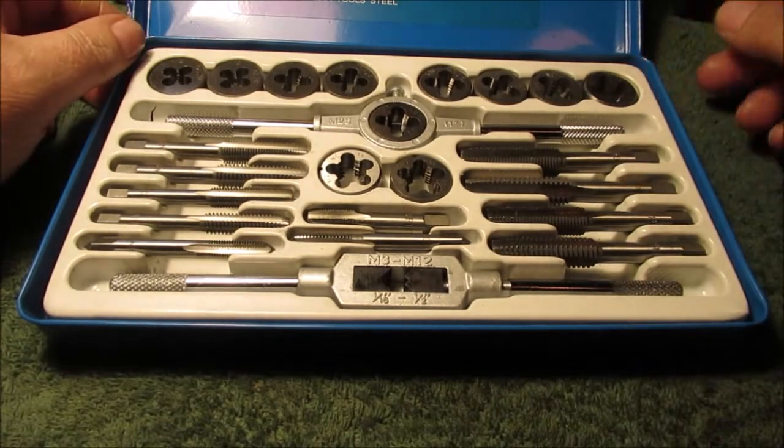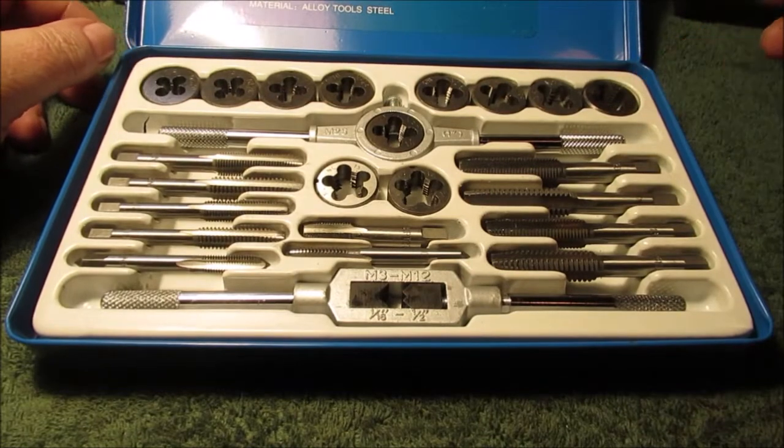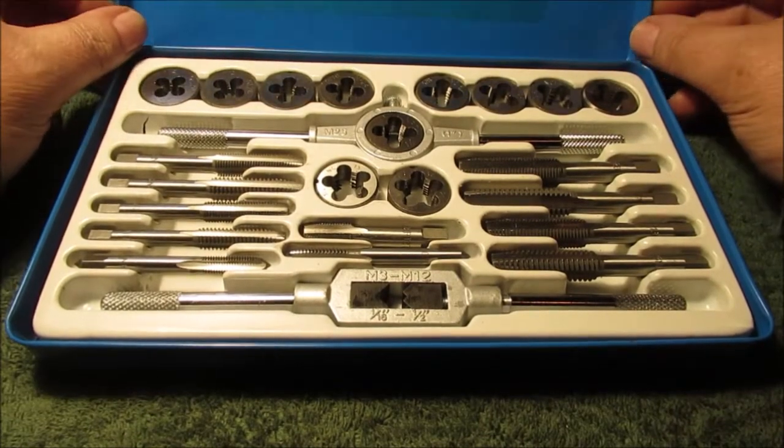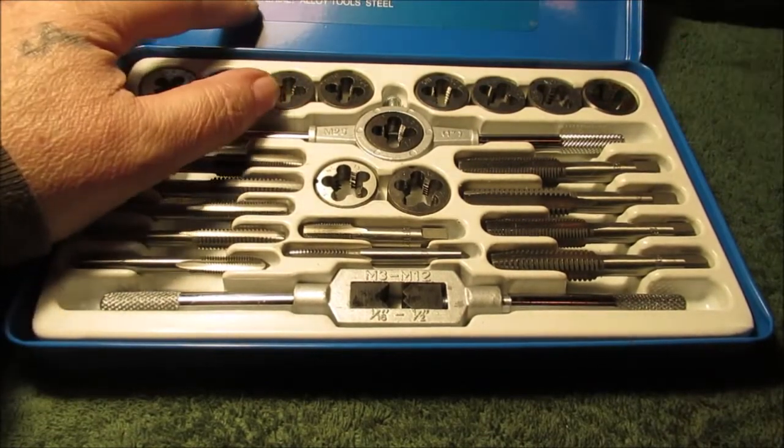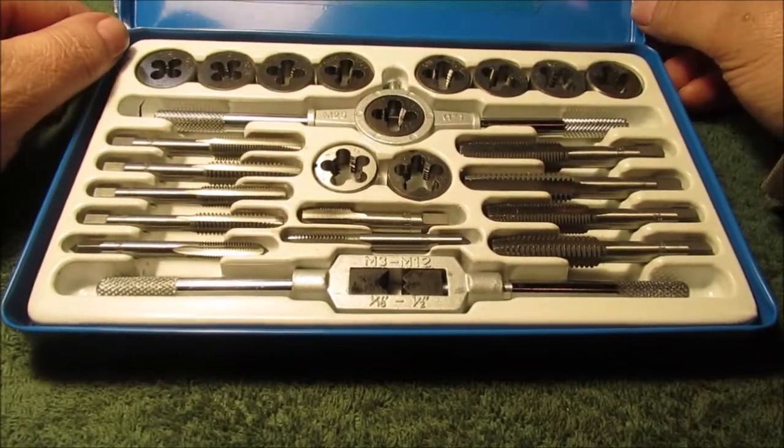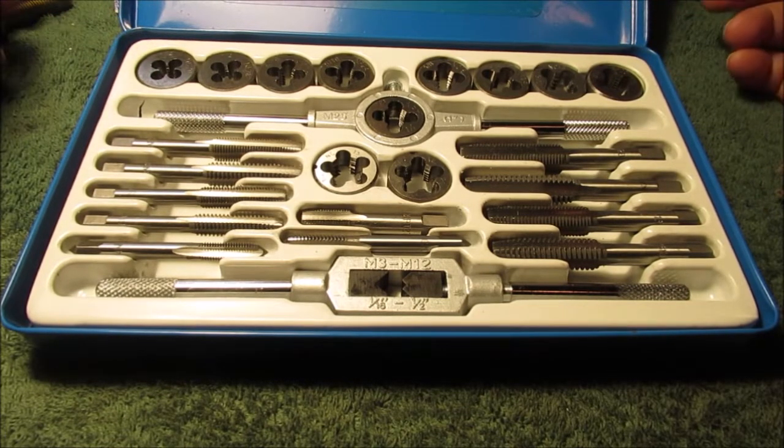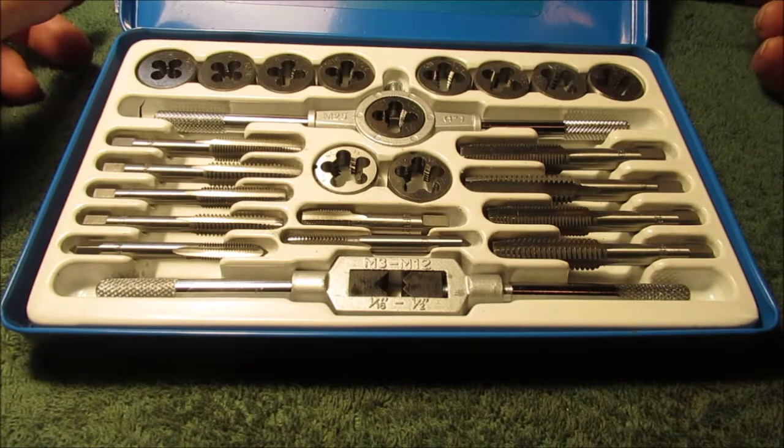This says alloy steel up here. I'll take a picture of it. Really good description on this. When I looked these up, they say they're like a bearing steel with a CR number, which is chrome. Rockwell hardness of 60.